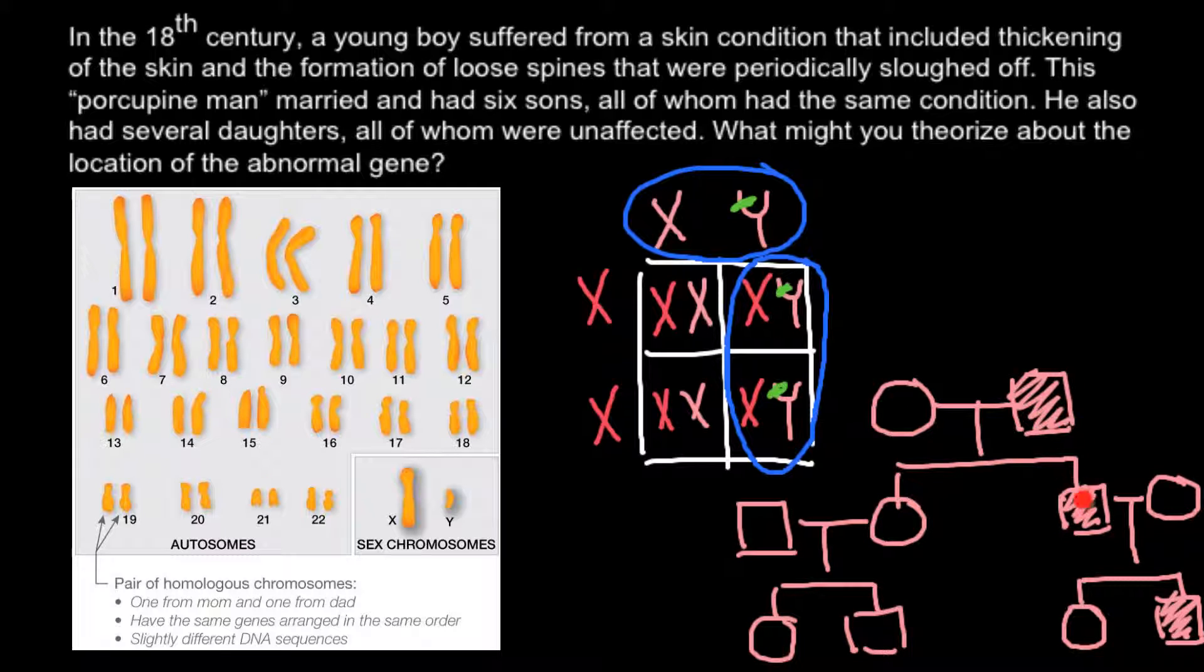In this case, once again, from father to son. We do not see skipping of generations when the trait disappears and then reappears again. That might happen if this would be an autosomal recessive genetic disorder.